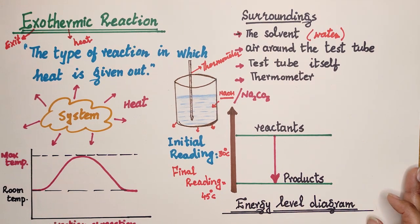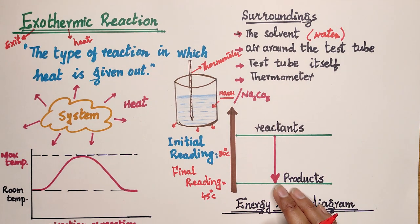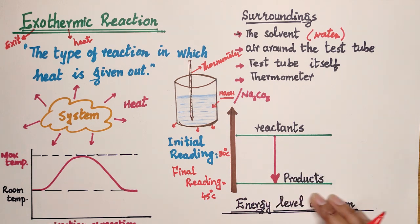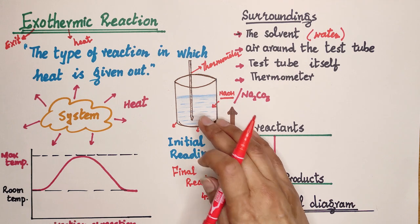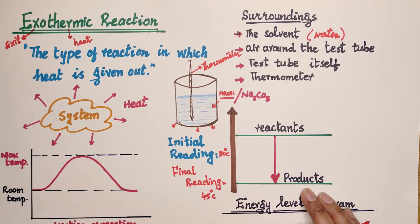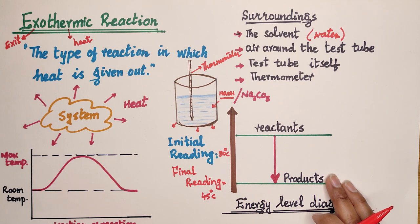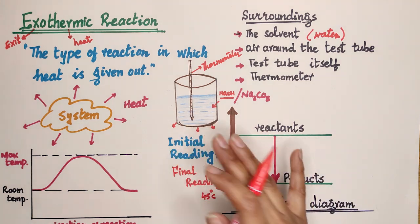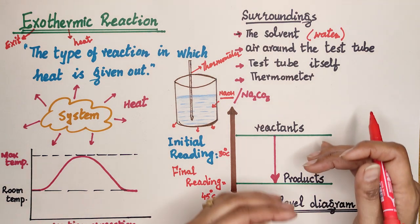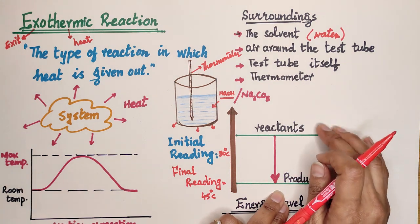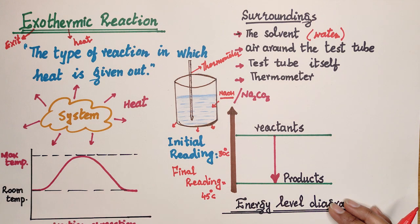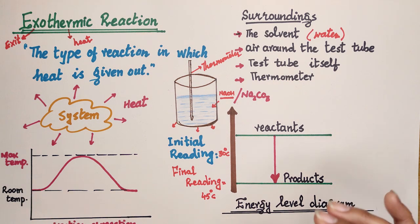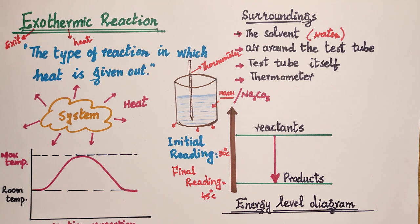The energy level diagram for an exothermic reaction shows that the products have less energy than the solid and water at the start. Products have less energy than the reactants because all of the heat energy is released or given out to the surroundings.